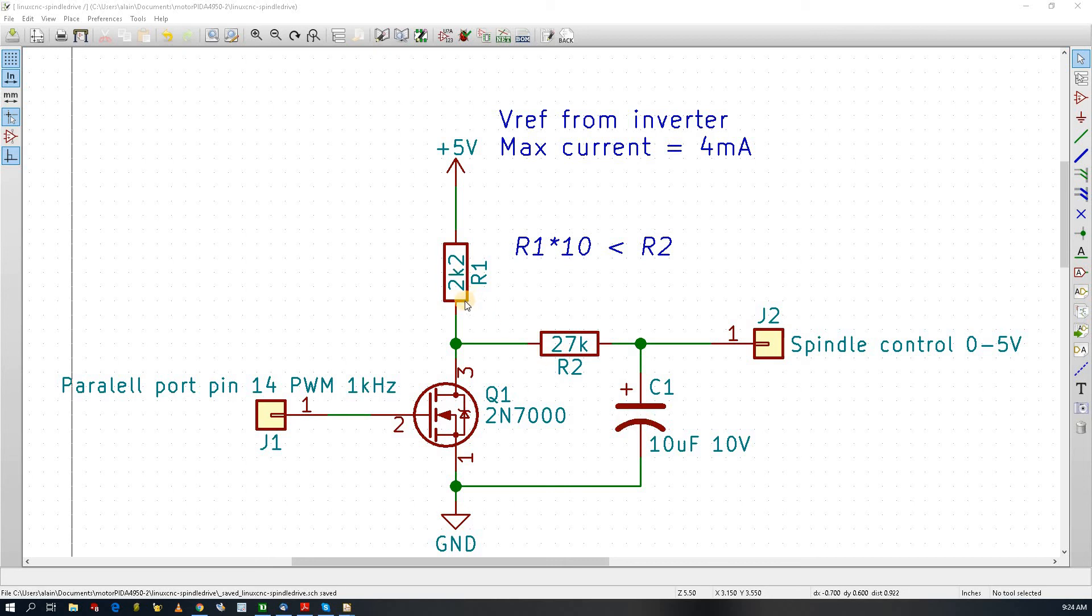The reason why it's 10 times is I want the pull-up to be as fast as the pull-down. So when the capacitor charges I want that to be as fast as when the capacitor discharges. Although it's impossible to get because this is not a totem pole, getting a resistor 10 times smaller is a nice cheap compromise.